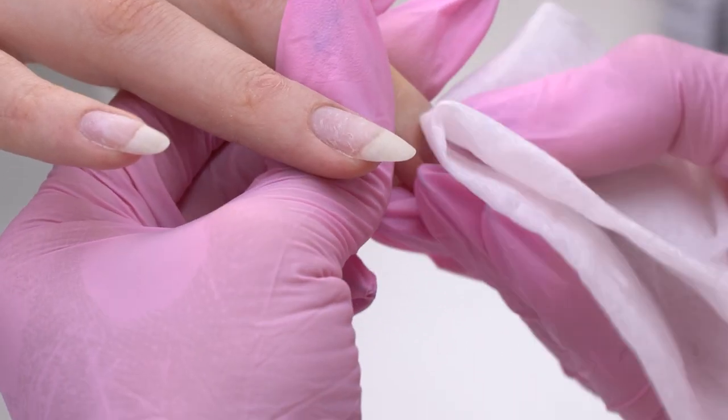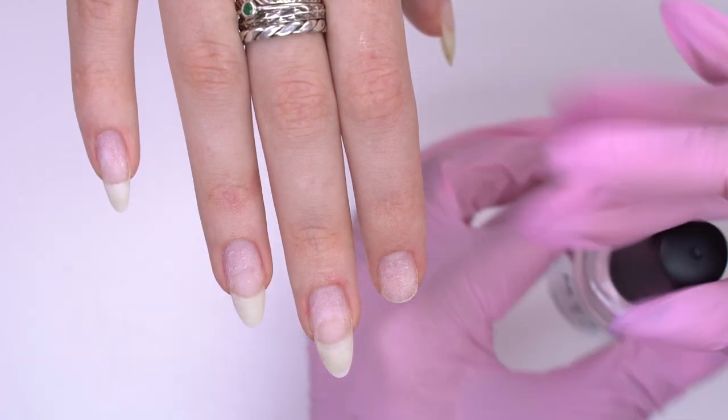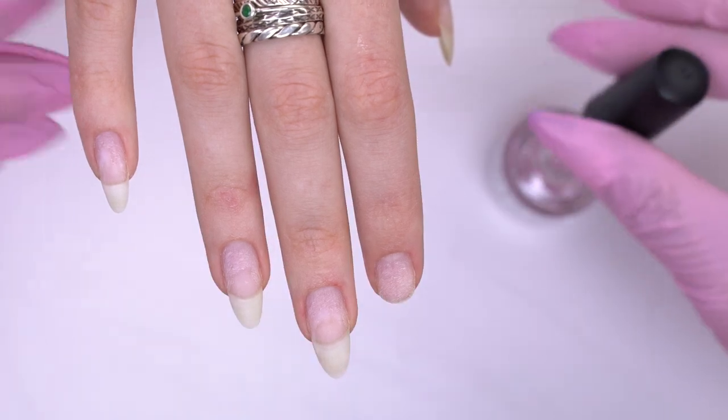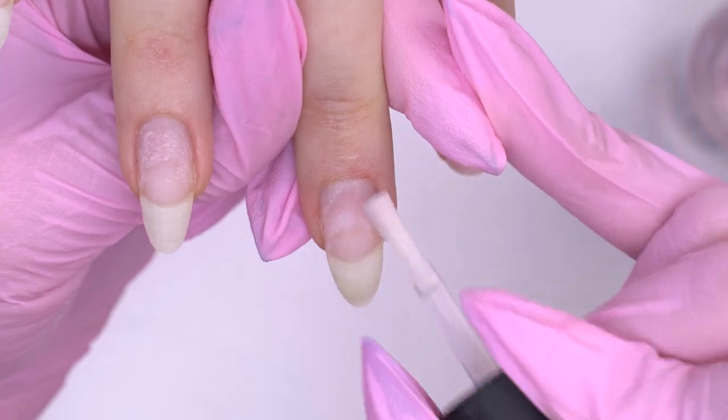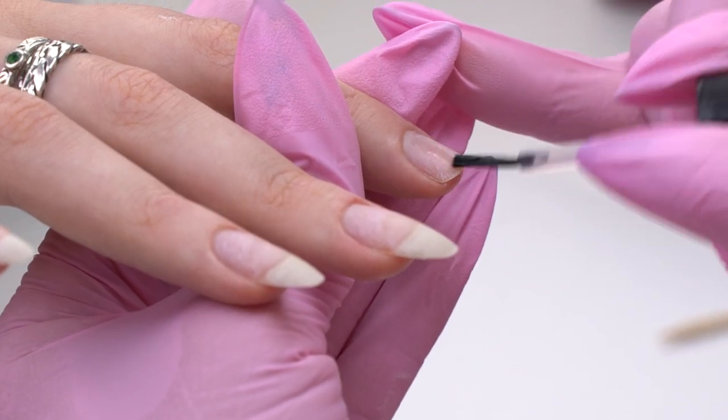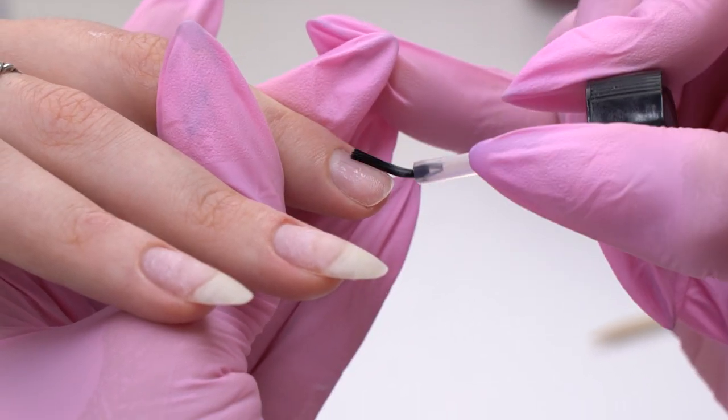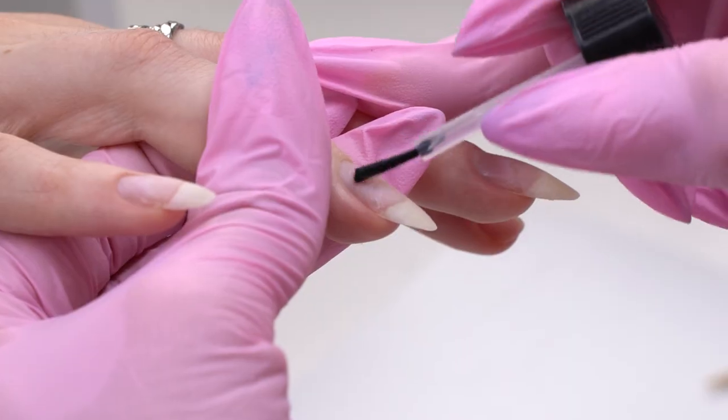On such wet nails, I always apply a dehydrator first to dry up the nail blade a bit more. Next comes a primer for better bonding between the nail and the coating. We apply it only on the natural nail part. There is no point in applying it over the base coat.